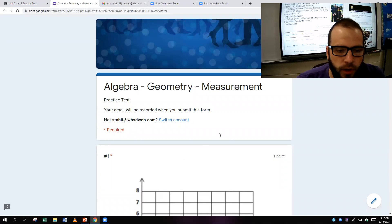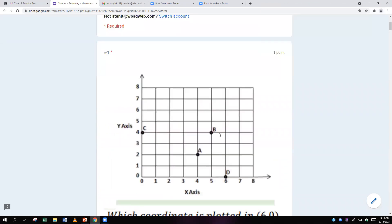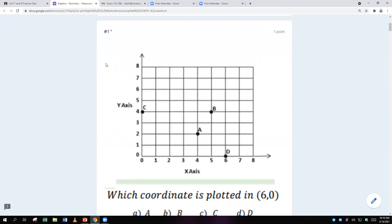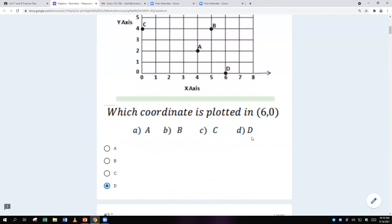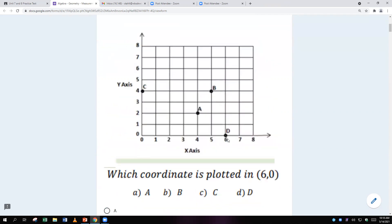We are going to first look at coordinate planes here, and the real problem students have is not knowing that you go over first and up. So it says which coordinate is plotted at 6, 0. So you want to go 6 over, 0 up, that's going to be D, right? 6 over, 0 up is D.